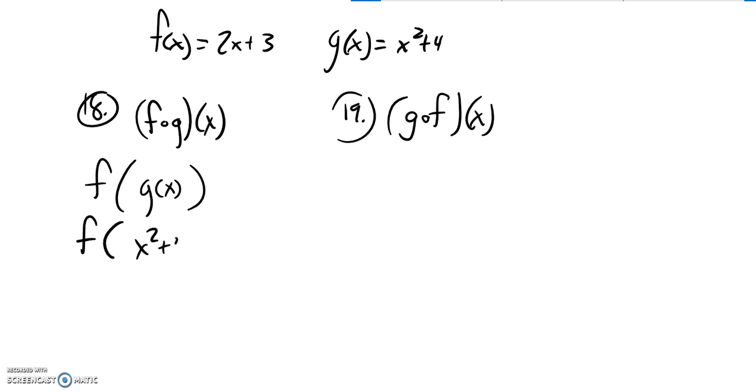So f of x squared plus 4. What I'm doing is I'm taking this and I'm plugging it into f. So f is 2 times some input plus 3. The input just happens to be x squared plus 4.